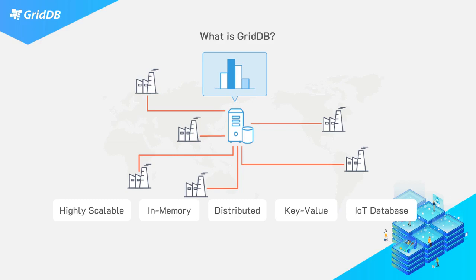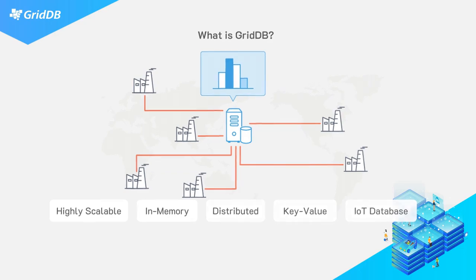GridDB is a highly scalable in-memory NoSQL database. It uses a distributed architecture allowing for easy scale-out. This also means that using commodity, inexpensive hardware is practical.